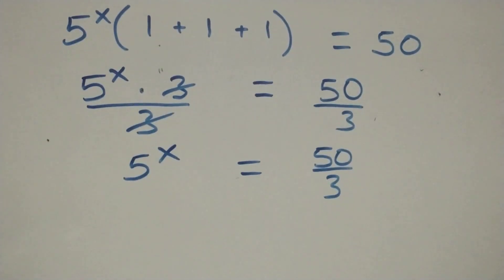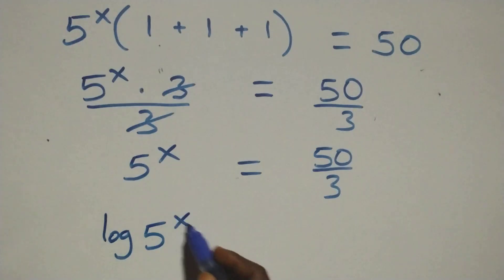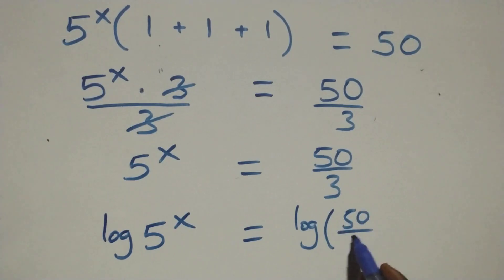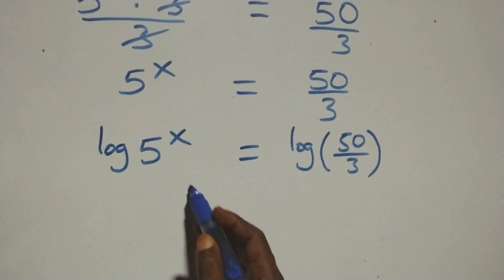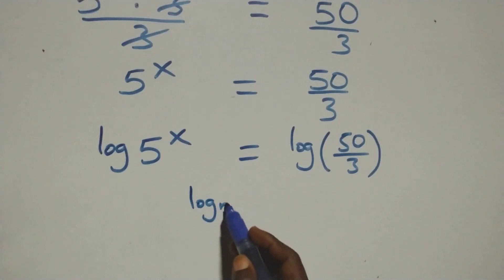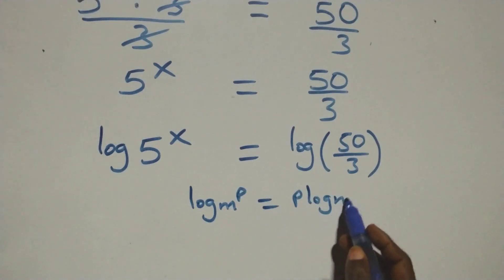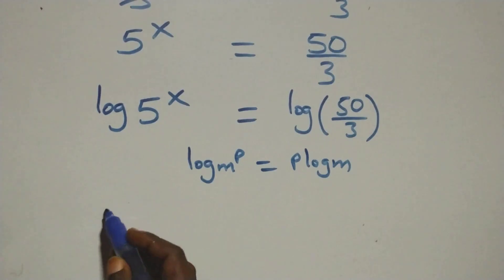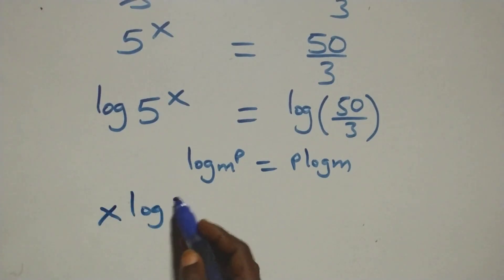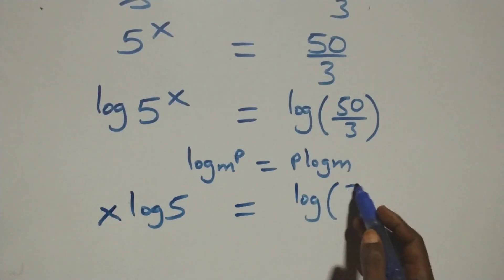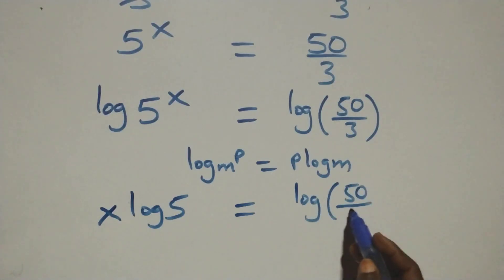The next step here: we take the log on both sides. We have log of 5 raised to power x equals log of 50 over 3. We apply the power rule of logarithm, where log m raised to power p is the same as p log m. So we have x log 5 equals log(50/3).